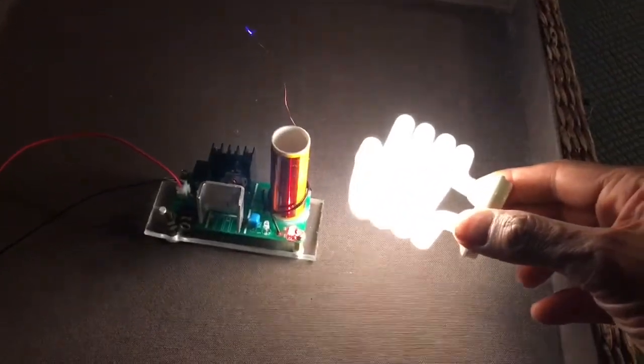Here's a slightly bigger one. Let's try that. Wow, that's also going bright. Here's a neon bulb, which glows at quite a distance, about six inches.